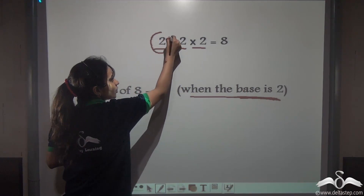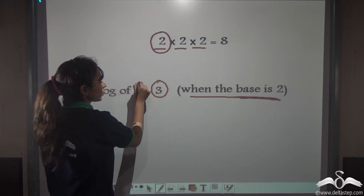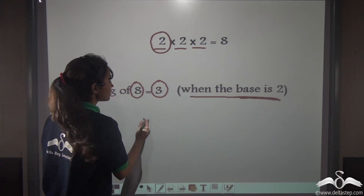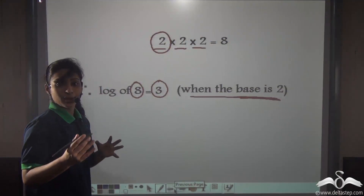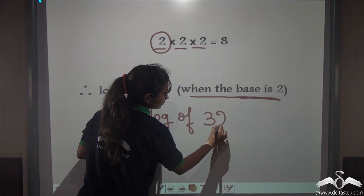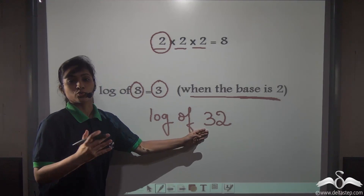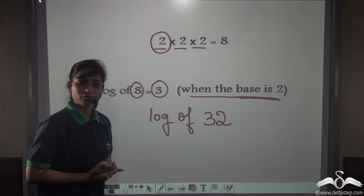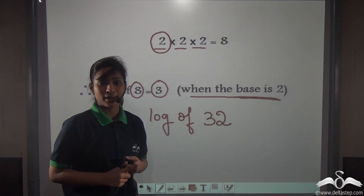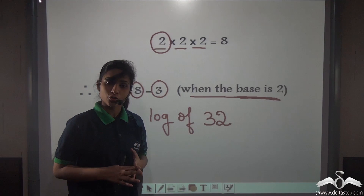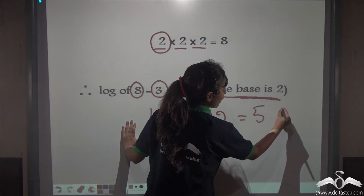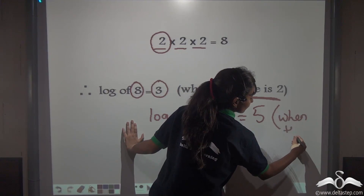What do I mean by this? I am multiplying 2 how many times? 3 times to get 8. The log of 8 will be 3 because 2 is multiplied with itself 3 times. Similarly, if I ask you what is the log of 32, again when the base is 2 — you have to think how many times you will multiply 2 to itself to get 32. Well, 2 to the power 5 is 32. You know that 2 when multiplied with itself 5 times you get 32. So log of 32 will be 5 when the base is 2.